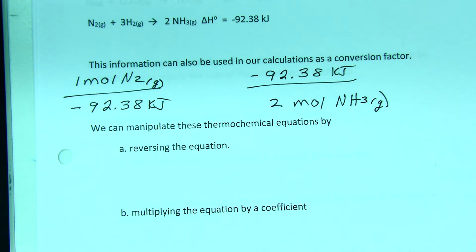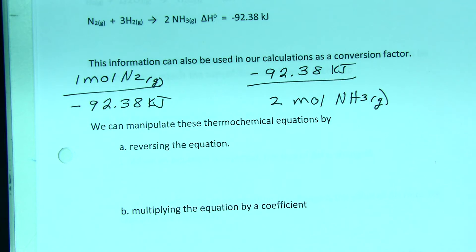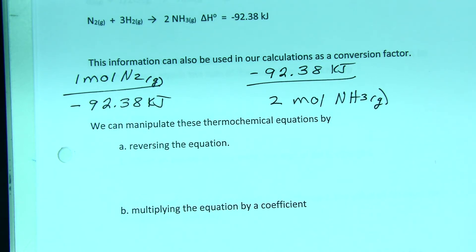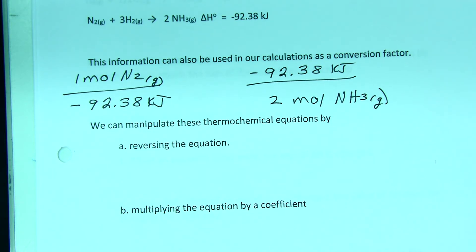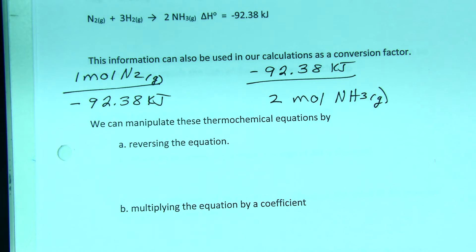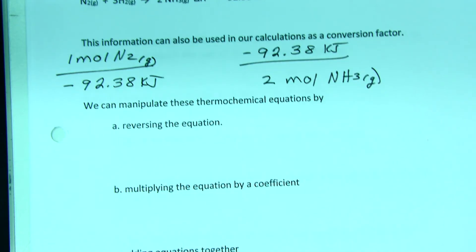The next thing that we can do with these thermochemical equations is to start manipulating them, turning them around, adding them together, multiplying them. We introduced the concept of manipulating equations when we were balancing redox equations. We multiplied half reactions by a coefficient to make something cancel out. We can do the same thing with thermochemical equations.